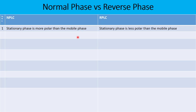When it comes to reverse phase liquid chromatography, the stationary phase is less polar than the mobile phase, or you can say that the mobile phase is polar as compared to the stationary phase.